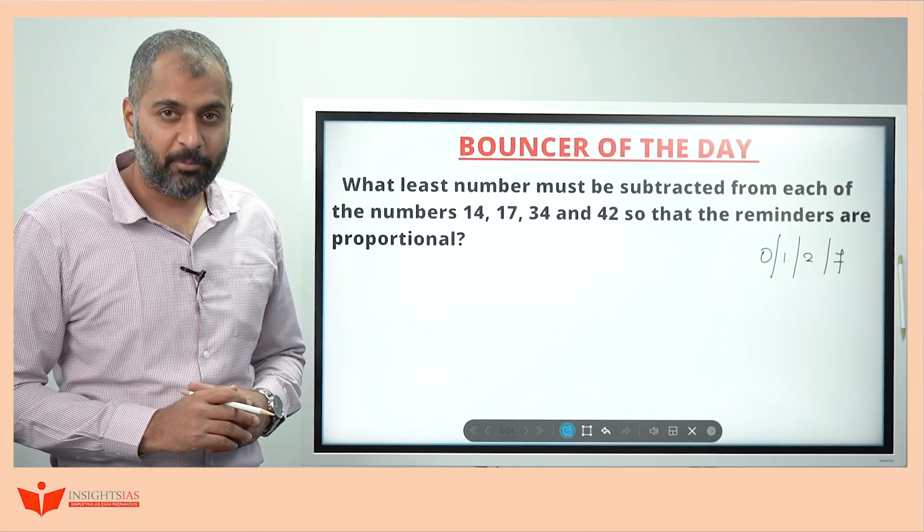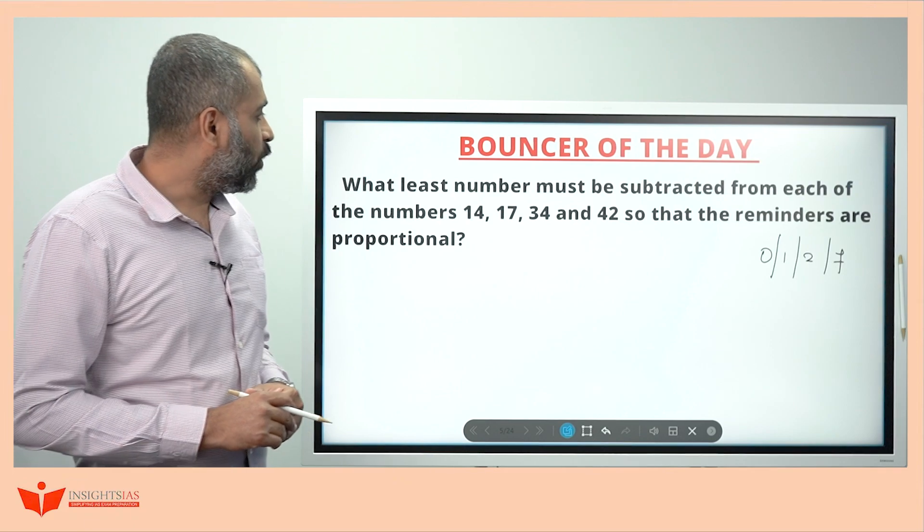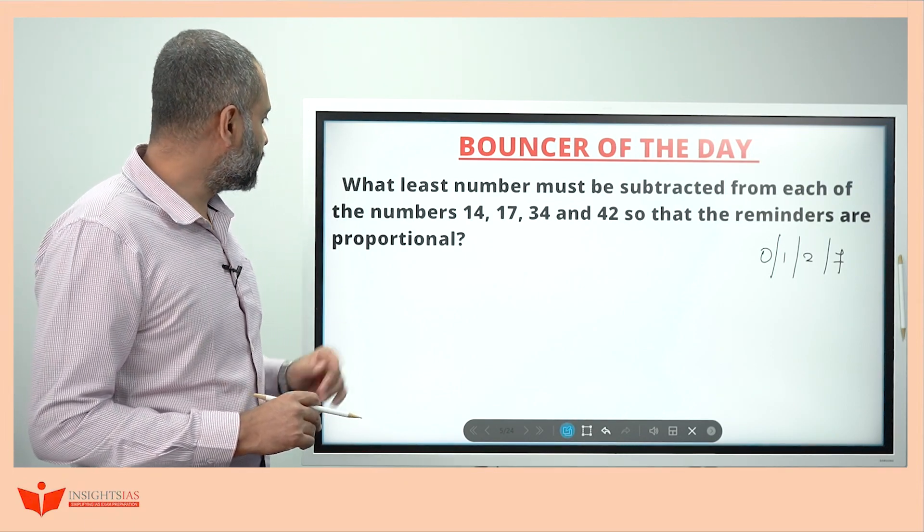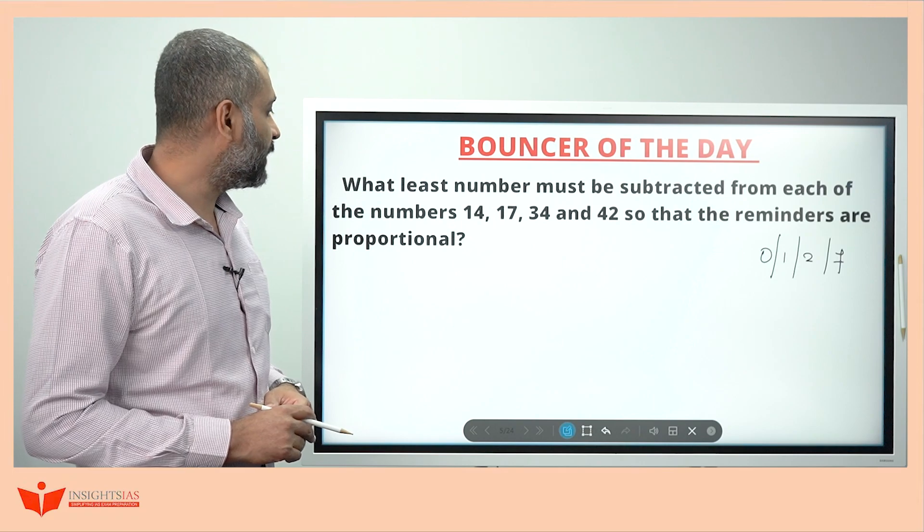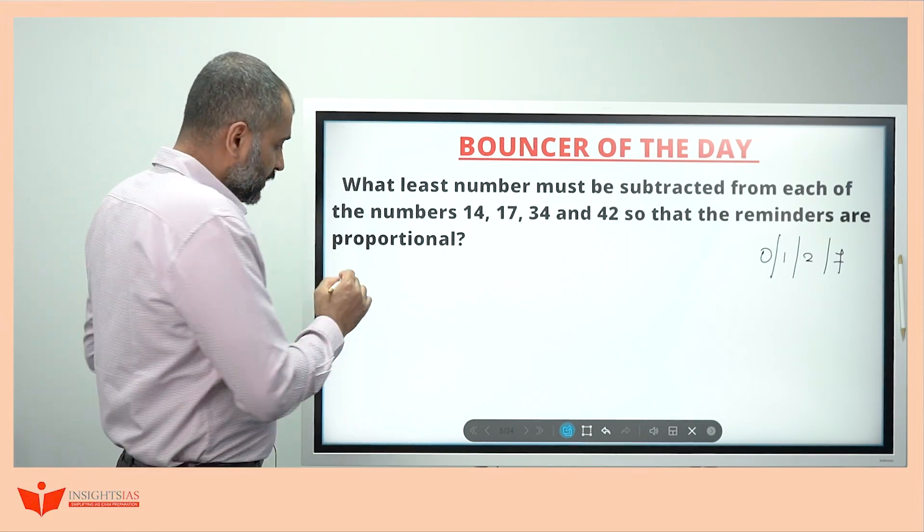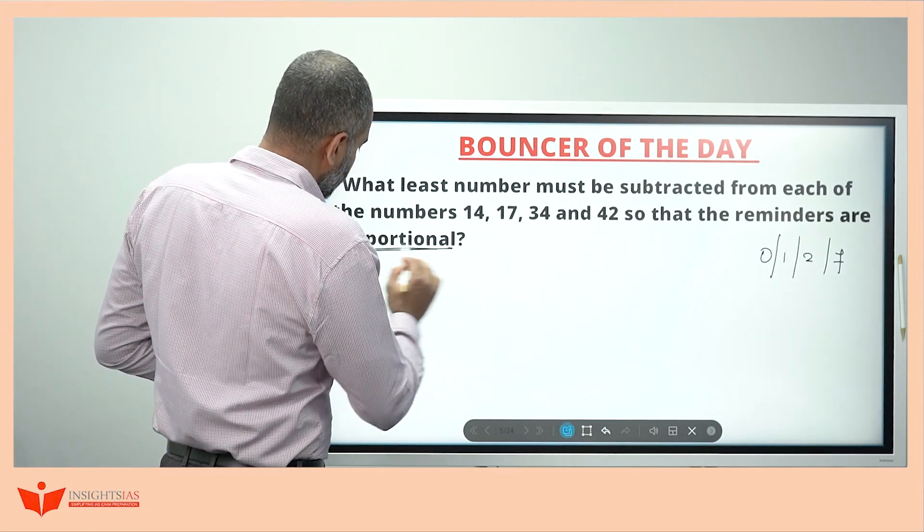Bouncer of the previous video. What least number must be subtracted from each of the numbers 14, 17, 34 and 42, so that the remainders are proportional? Proportional. The concept here is proportions.